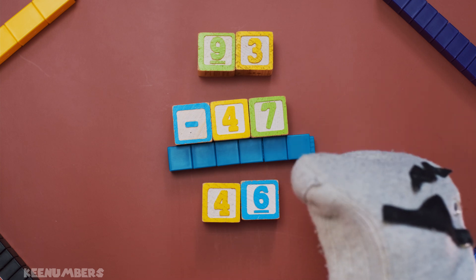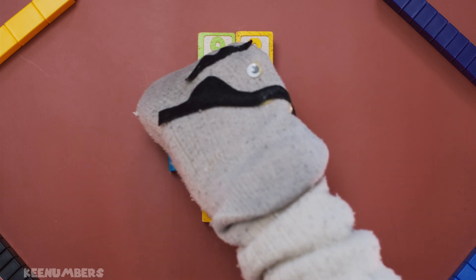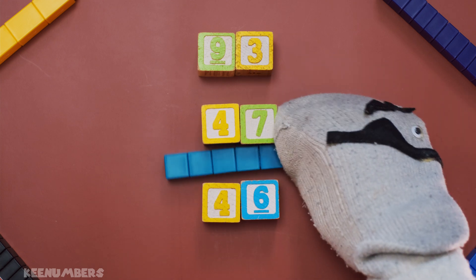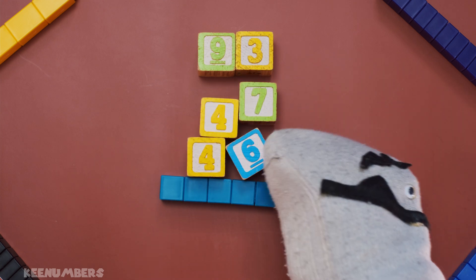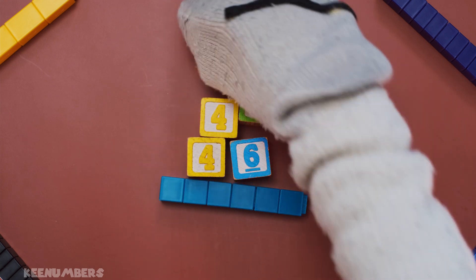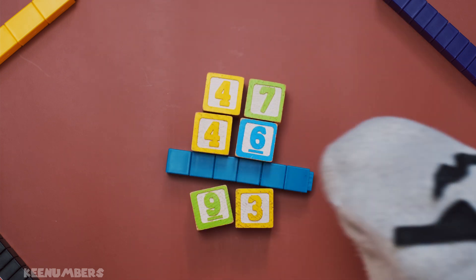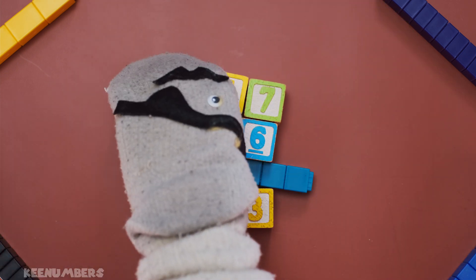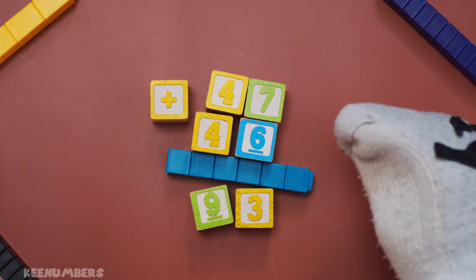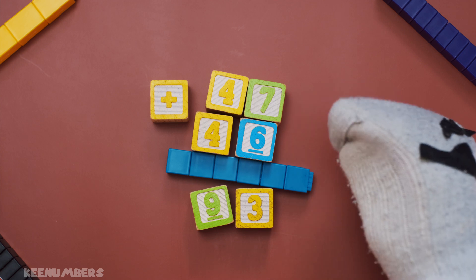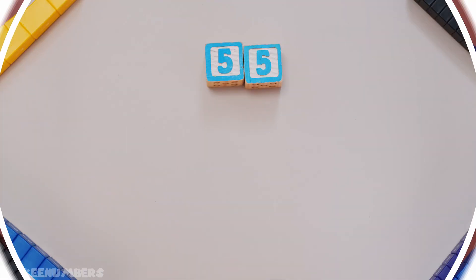If you need to review this, just think about it this way: 46 plus 47 is indeed 93. 4 plus 4, 8. 7 and 6, 13. That's 93. Yarr.